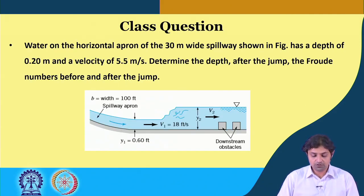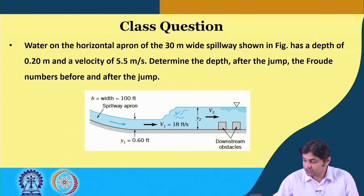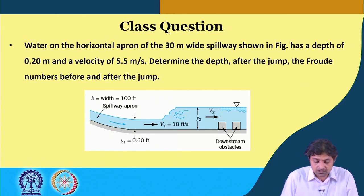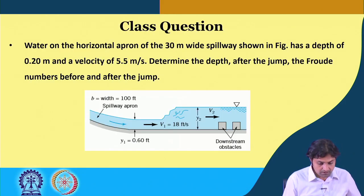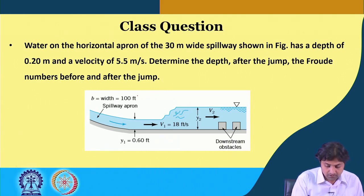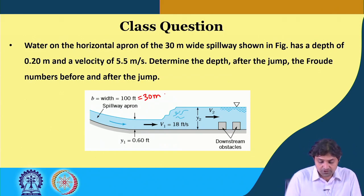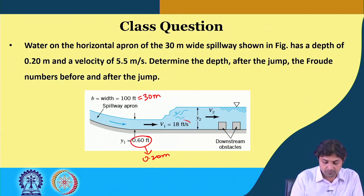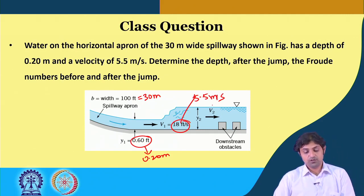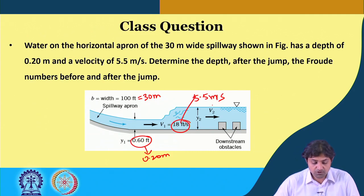The problem states that water on the horizontal apron of a 30-meter wide spillway has a depth of 0.06 feet, equivalent to 0.20 meters, and a velocity of 18 feet per second, that is 5.5 meters per second. The question asks us to determine the depth after the jump and the Froude numbers before and after the jump. This is a simple application of the formulas we have.